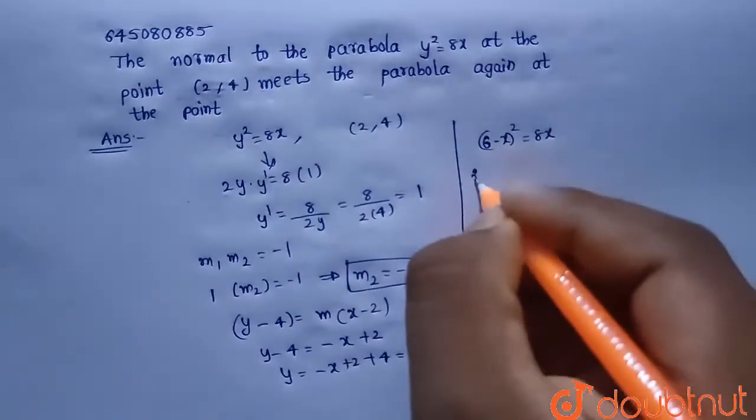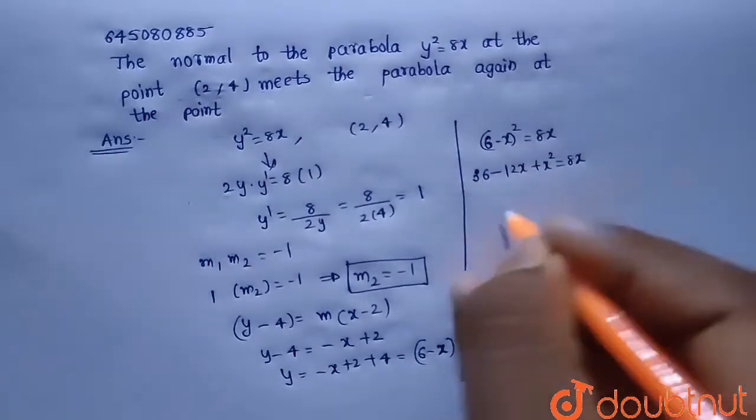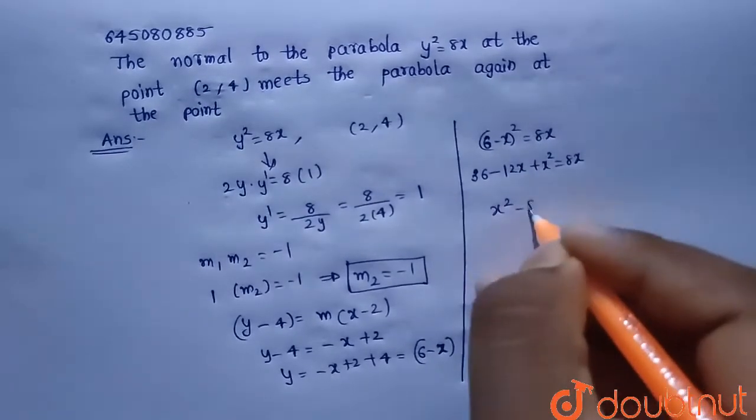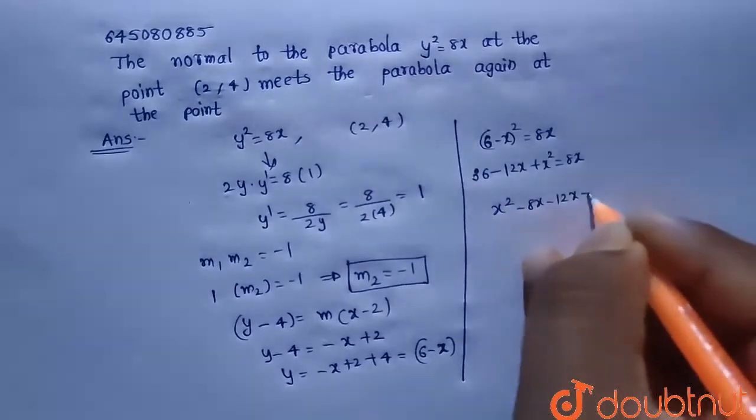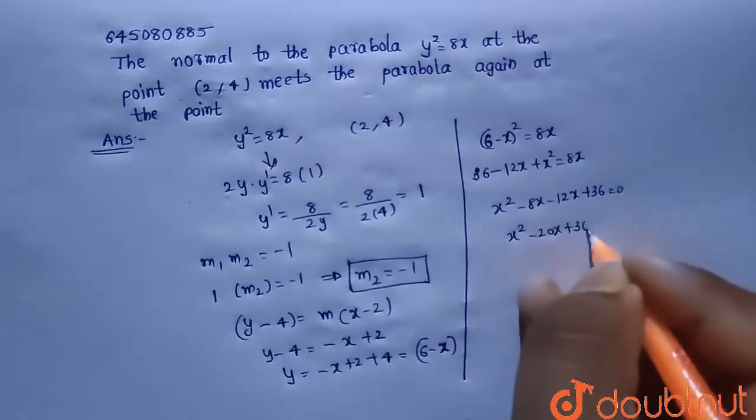From this, 36 - 12x + x² = 8x. So that is x² - 8x - 12x + 36 = 0. That is x² - 20x + 36 = 0.